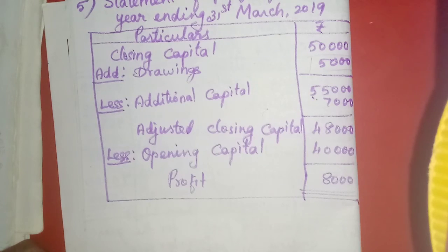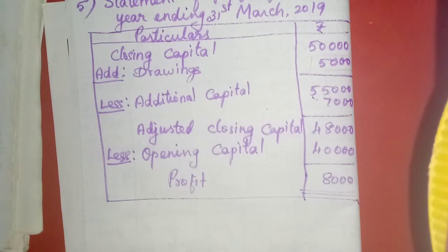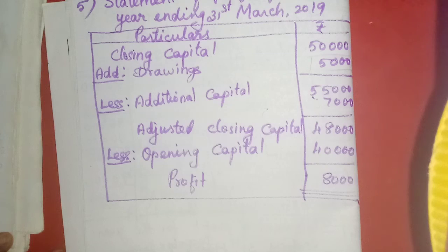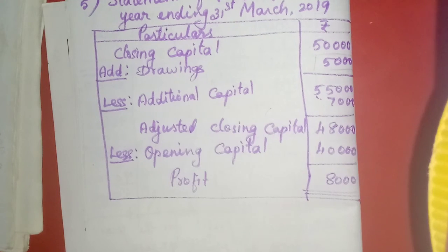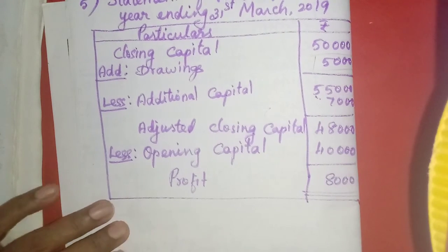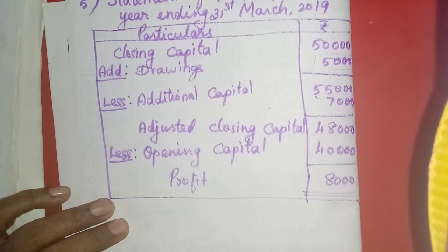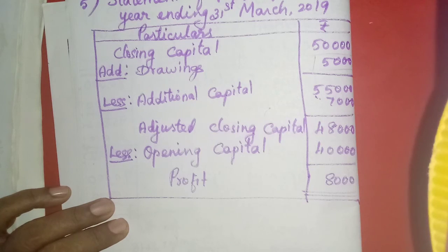Today we have learned three exercises and three illustrations using the capital comparison method. Tomorrow we will learn the next method — the statement of affairs — which is a little more work but easy. Thank you, students.